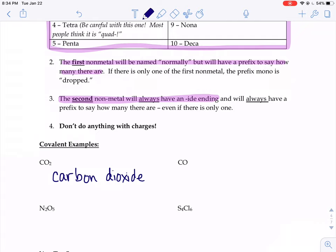So that's this rule right here. If there's only one of the first nonmetal, we drop that mono part. The second half of that, the dioxide part, the second nonmetal always has an -ide ending, di-ox-ide. And we always have a prefix, no matter what.